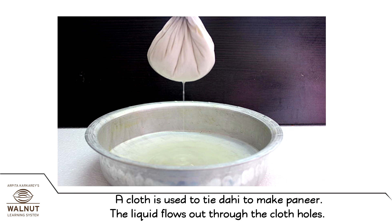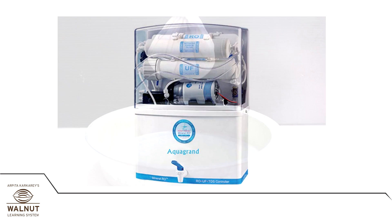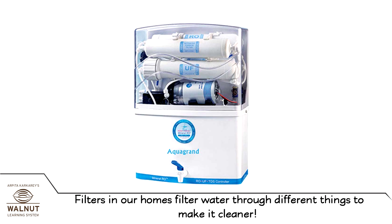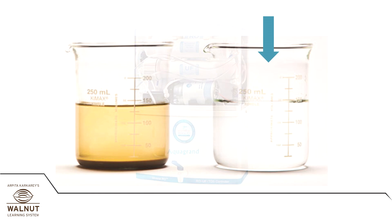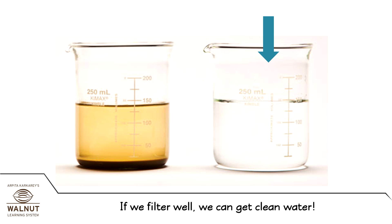A cloth is used to tie dahi to make paneer — the liquid flows out through the cloth holes. Filters in our homes filter water through different things to make it cleaner. If we filter well, we can get clean water.